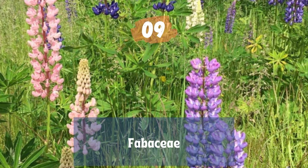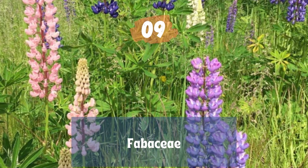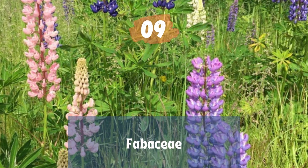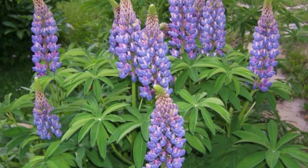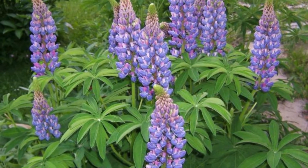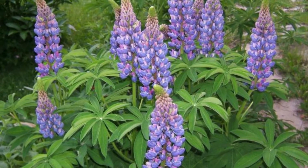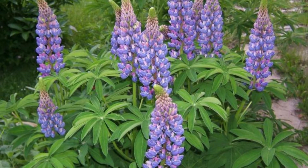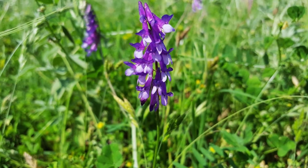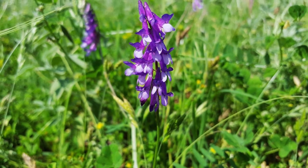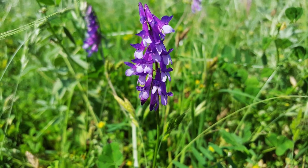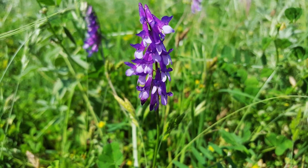The Fabaceae or Leguminosae, commonly known as the legume, pea, or bean family, are a large and agriculturally important family of flowering plants. It includes trees, shrubs, and perennial or annual herbaceous plants, easily recognized by their fruit and compound stipulate leaves. The leaves usually are pinnately compound, sometimes trifoliate with three leaflets or palmate. The leaflets radiate from a common point, and the leaves of a few species are simple or reduced to scales.